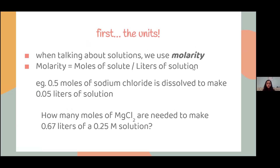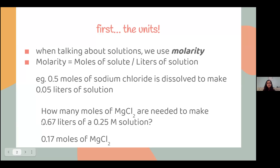The formula is just: molarity equals moles of solute over liters of solution. The answer is 0.1675, but you'd round to 0.17 — remember you have to account for sig figs. When we're multiplying a two-sig-fig number by another two-sig-fig number, your answer also has to have two significant figures. So the answer is 0.17 moles of MgCl₂.